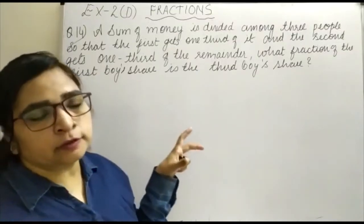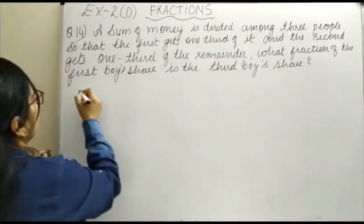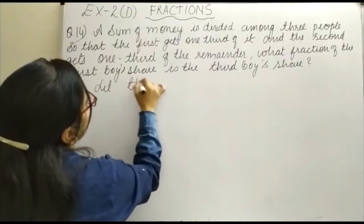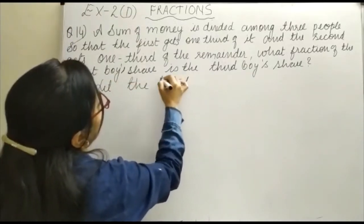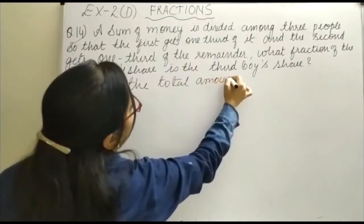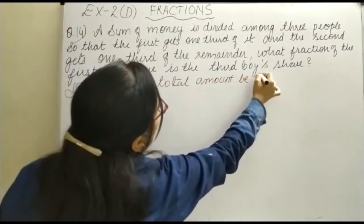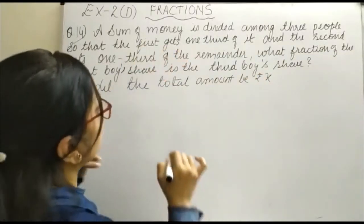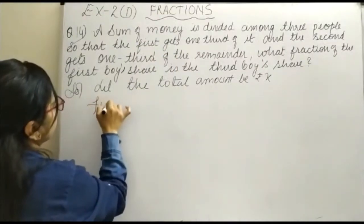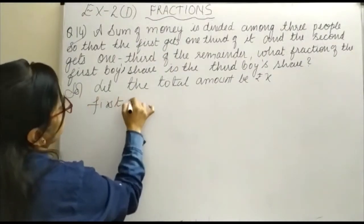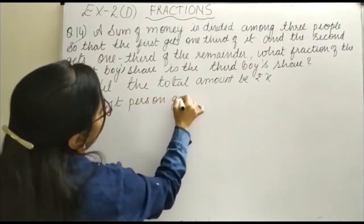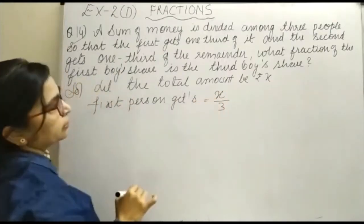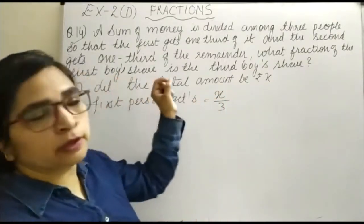Let the total amount be x. How much is the first person getting? The first person gets one third, therefore the first person gets x upon 3. And the second gets one third of the remainder.